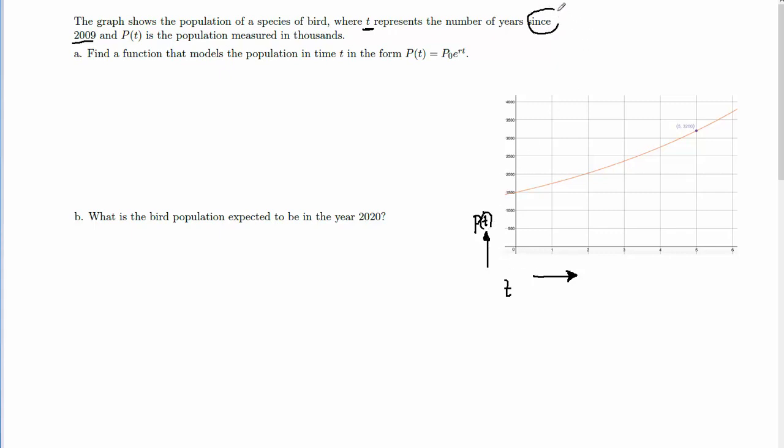One thing that you need to pay attention to is that the problem says since 2009. So this means that the time starts at 2009 here. So the zero corresponds to 2009. So 2009 plus 1 is going to give us 2010, plus 2 will give us 2011, and so on. Plus 6, right here, is going to give us 2015. Each one of the points on the graph on the horizontal axis will give us a year that corresponds by just a number for t.